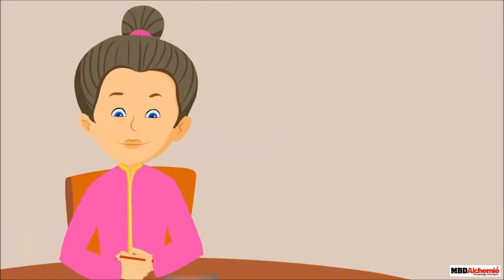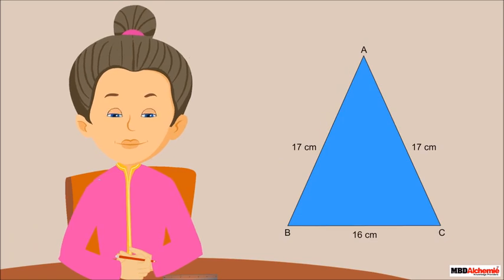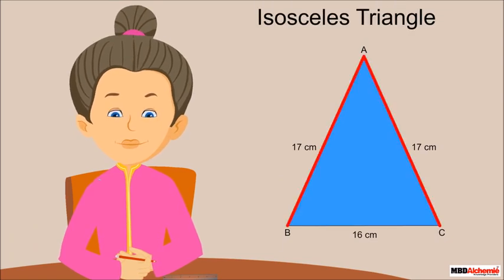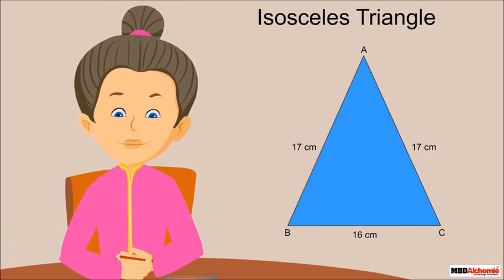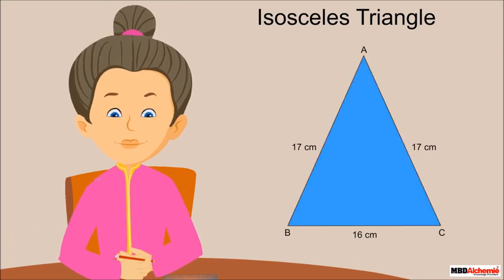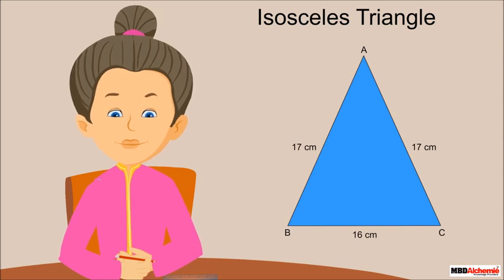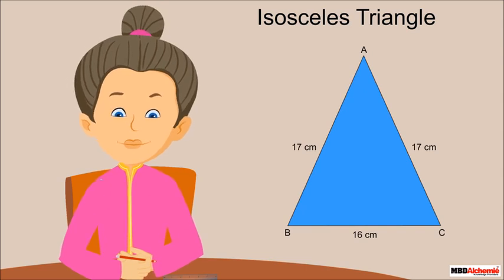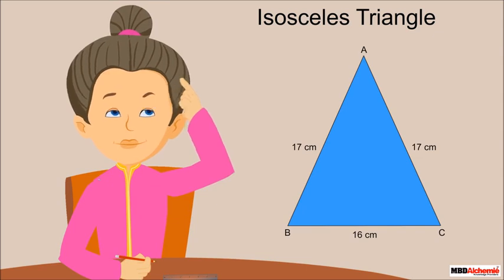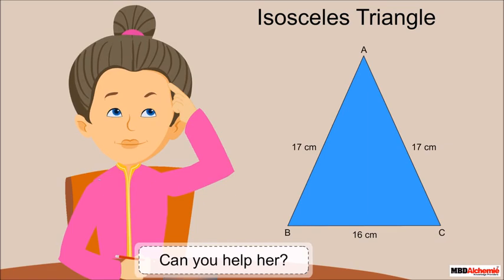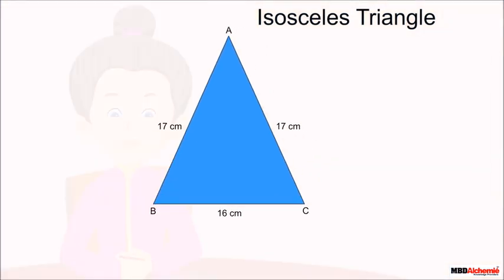Sophie says her triangle is an isosceles triangle because its two sides are 17 centimeters each. She can find its area, but first needs to find the height of the triangle.